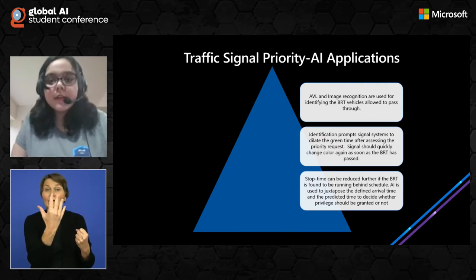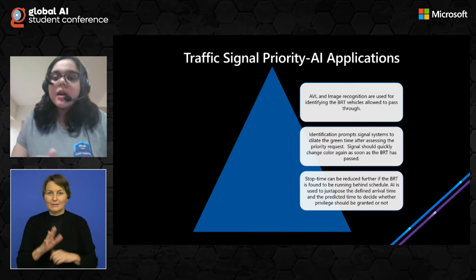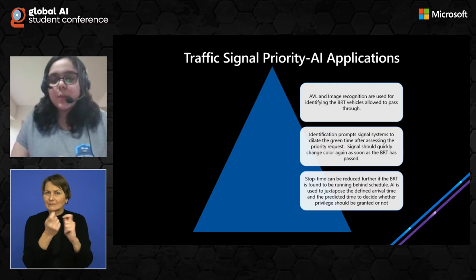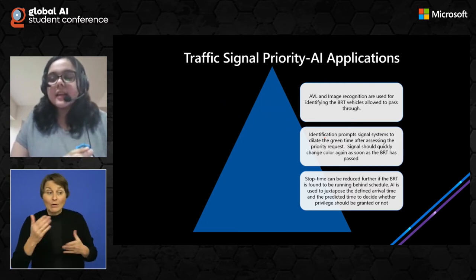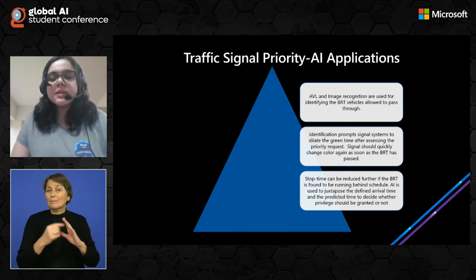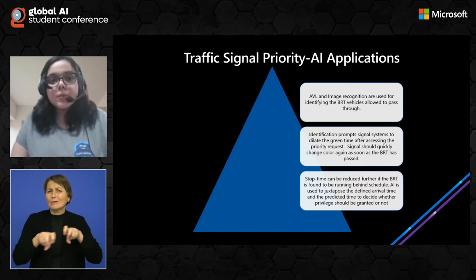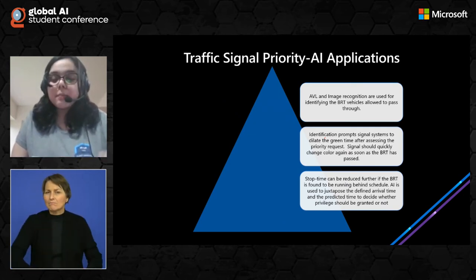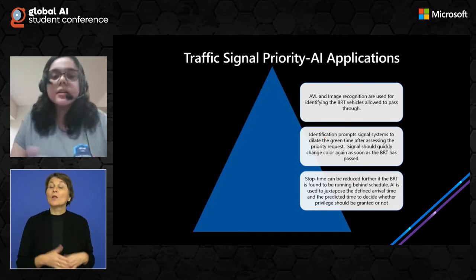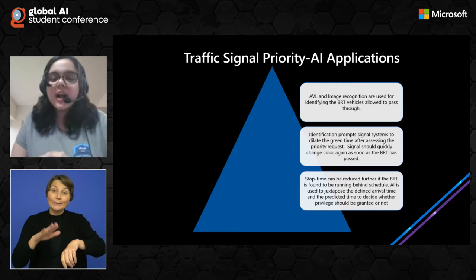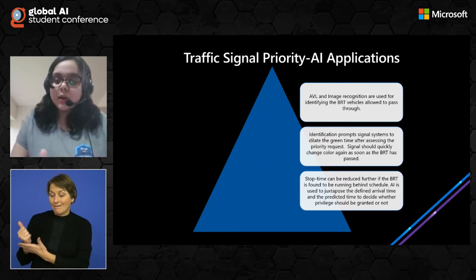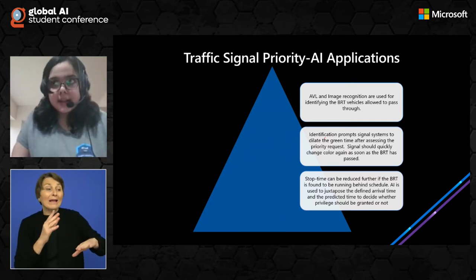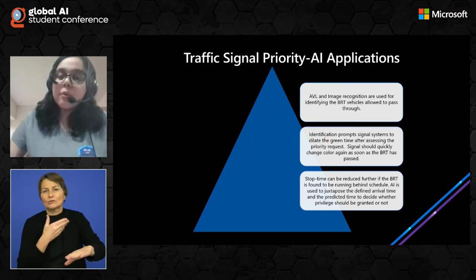Stop time can be reduced further if the BRT is found to be running behind schedule. Artificial intelligence is used to compare the defined travel time and the predicted time to decide whether a privilege should be granted or not. So in cases where there is no system of zero-wait for public transportation, if the vehicle is running behind schedule, AI can decide to provide zero red time to help it make up for the time loss.